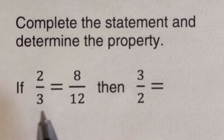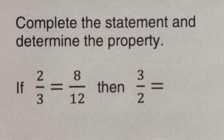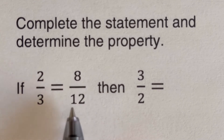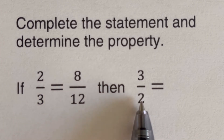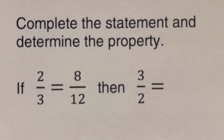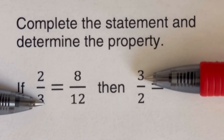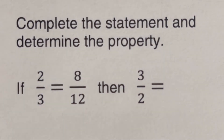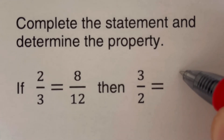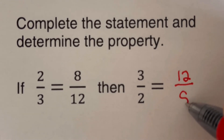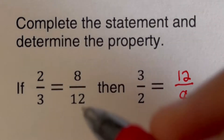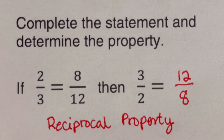Now let's take some examples. We need to complete the statement and determine which property applies. If two over three equals eight over 12, then three over two equals blank. Notice that the fraction on the left has been flipped, so we flip the right side as well, giving us 12 over eight. This is the reciprocal property of proportions.